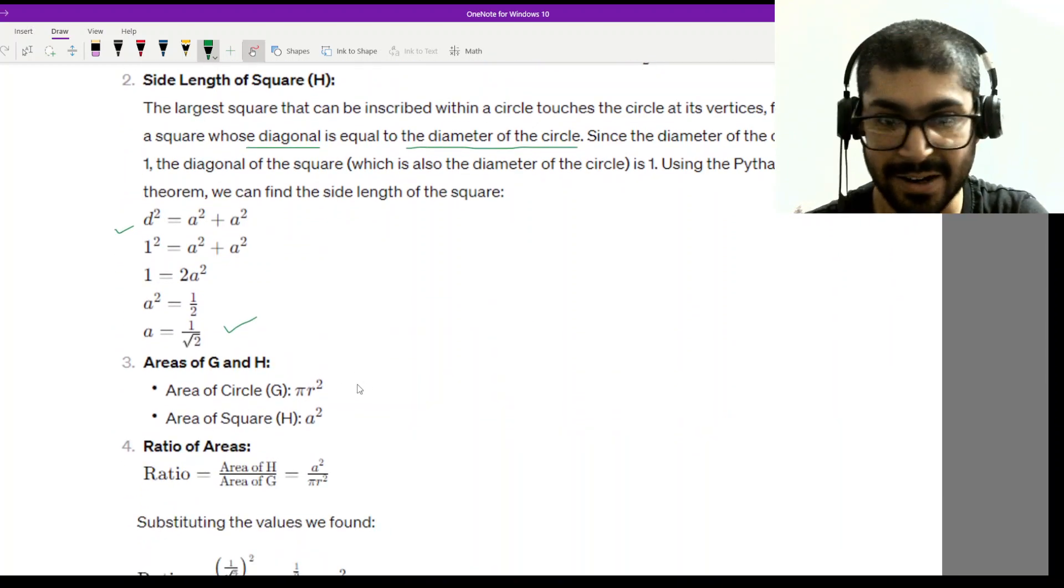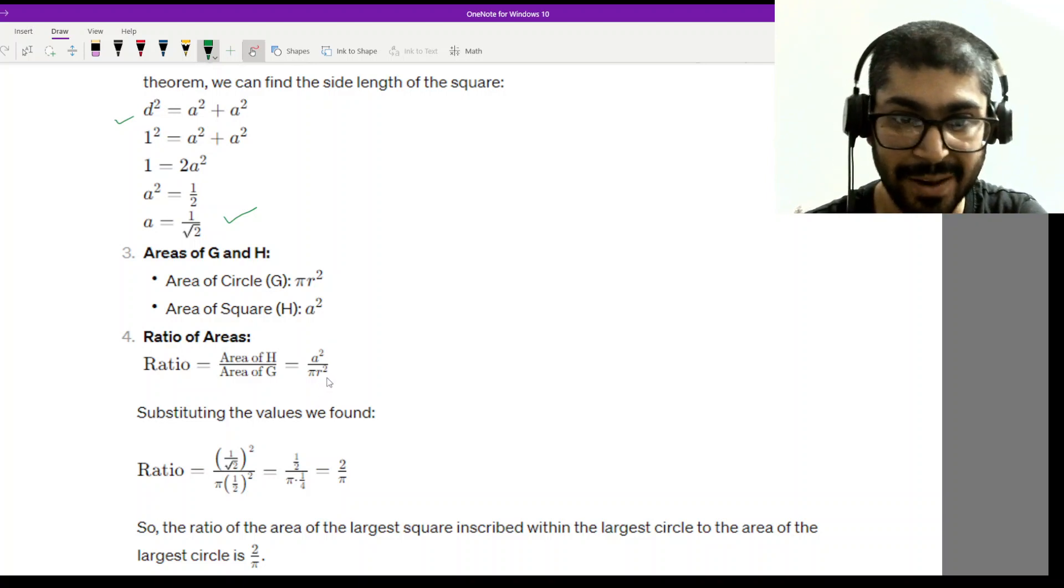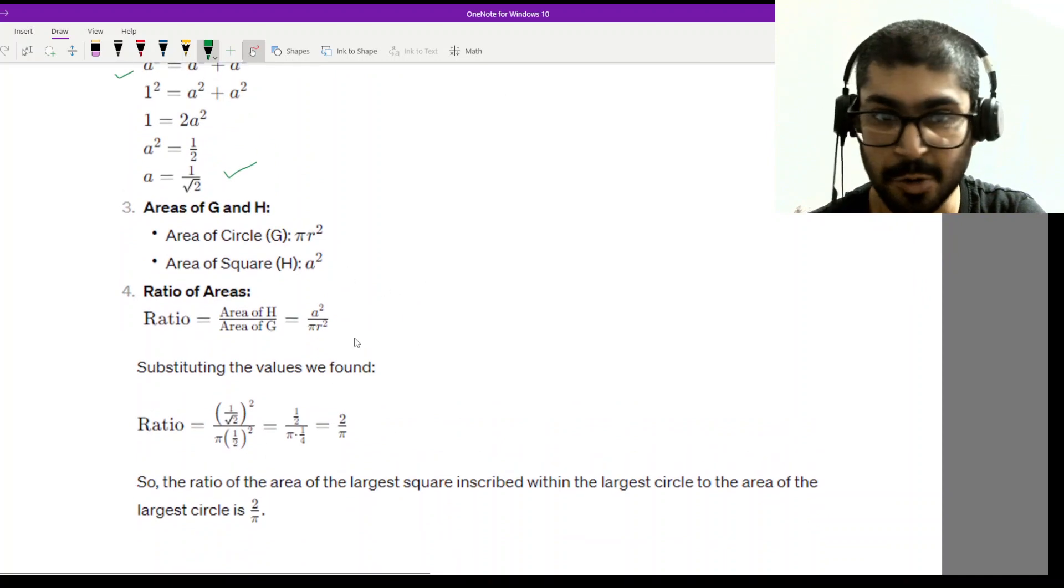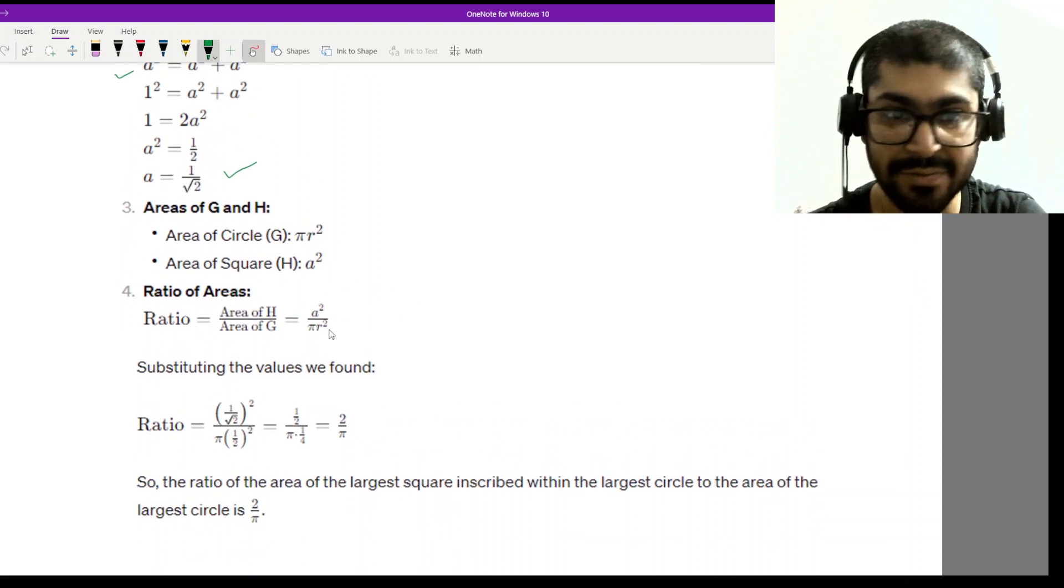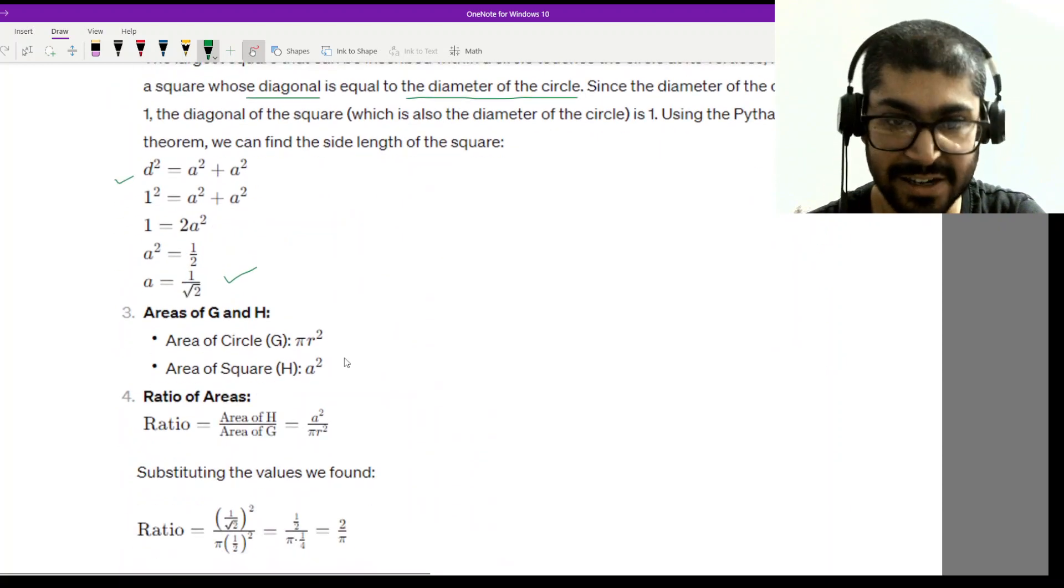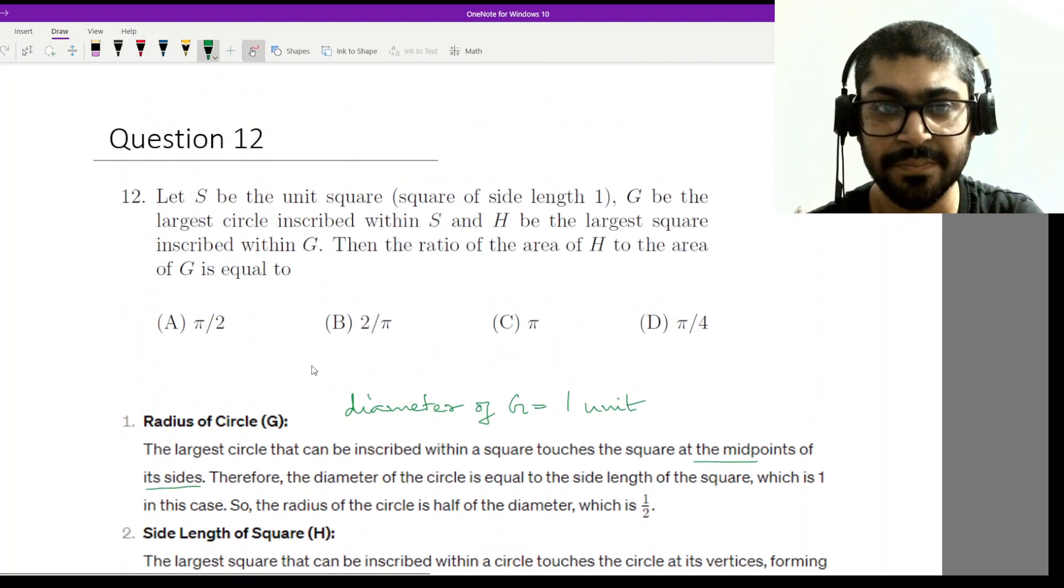Now for the areas of G and H: the area of circle G is πr² = π(1/2)² = π/4, and the area of square H is a² = (1/√2)² = 1/2. The ratio H to G is (1/2)/(π/4) = 2/π. So the answer is option B, 2/π.